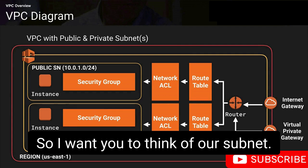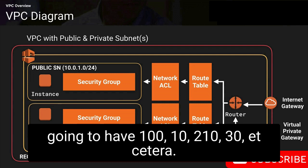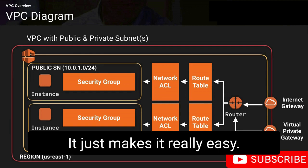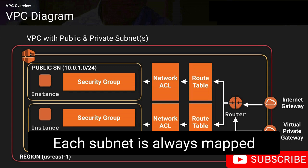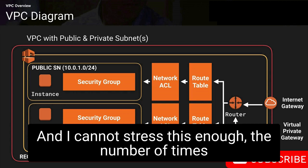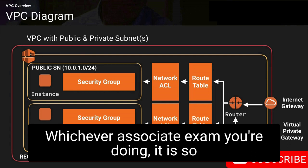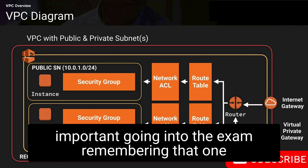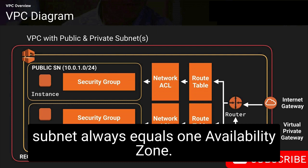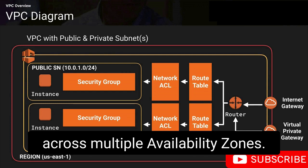Each subnet will always have a different address range — 10.0.1.0, 10.0.2.0, 10.0.3.0, etc. Critically, each subnet is always mapped directly to one availability zone. I cannot stress this enough — this type of question comes up on the exam repeatedly. One subnet always equals one availability zone. You cannot span subnets across multiple availability zones.